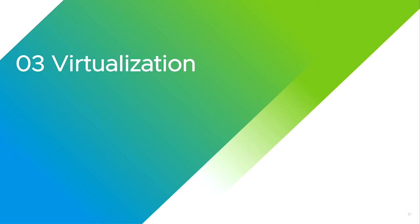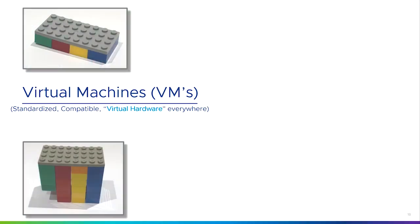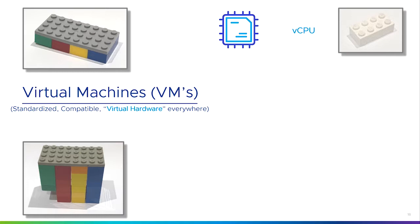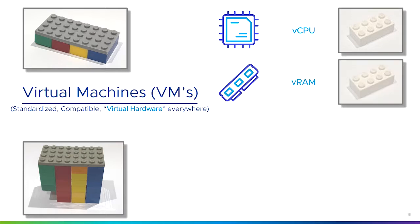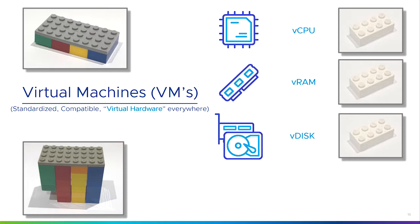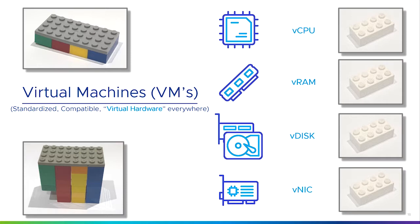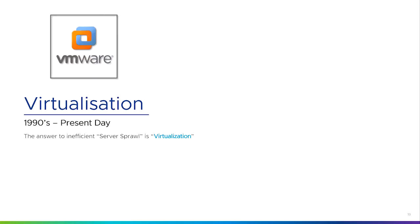So how could I do this differently? I could use virtualization. Instead of buying individual machines, I could buy a slightly beefier machine with lots of compute, storage, and network, and install something called a hypervisor on top. That allows me to convert all the physical CPUs into virtual CPUs, all the physical RAM into virtual RAM, all the physical disk into virtual disks or virtual datastores, and all the physical network cards into virtual network cards.